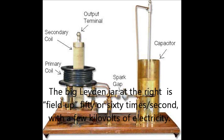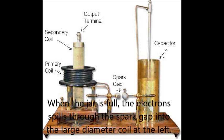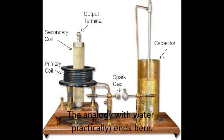The big Leyden jar at the right is filled up 50 or 60 times per second with a few kilovolts of electricity. When the jar is full, the electrons spill through the spark gap into the large diameter coil at the left.